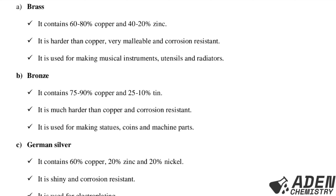Number four, copper readily forms useful alloys with other metals. The first alloy of copper is brass, which contains 60–80% copper and 40–20% zinc. Its properties include: it is harder than copper, very malleable, and also resistant to corrosion. The use of brass alloy: it is used for making musical instruments, utensils, and also radiators.